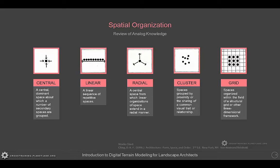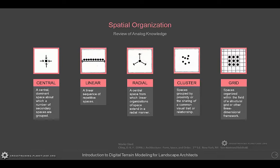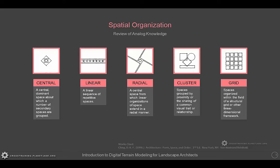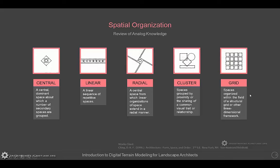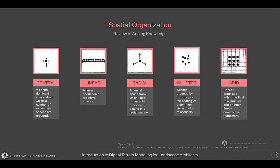Looking at Central, we notice that our eye tends to gravitate towards the center versus anywhere else. With Linear, our eye tends to move in a linear direction — if the linear object runs left and right, our eye tends to run left and right. With Radial, our eye tends to look outward rather than toward the center, so it's the opposite of Central. Cluster really doesn't direct your eye anywhere — you're constantly searching for some sort of relationship or commonality. And Grid is fairly predictable because it follows some sort of regular spaced pattern.